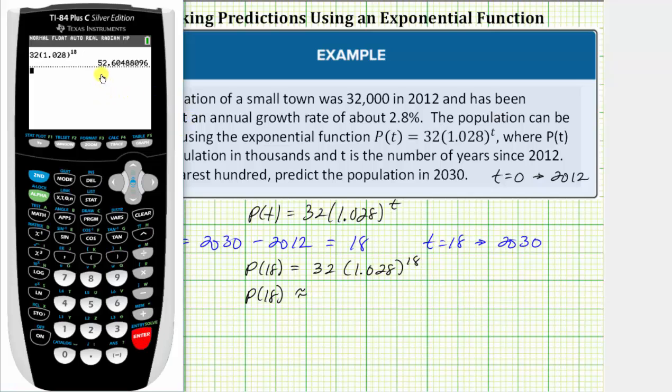We need to remember this value is in the thousands. So this 52 is really 52,000, the 6 is really in the hundreds place value, the 0 is in the tens, and the 4 is in the ones. If we wanted this value to be the number of people, we would have to multiply it by 1,000. So if we enter times 1,000...